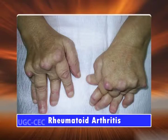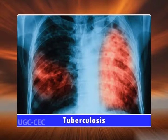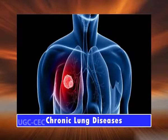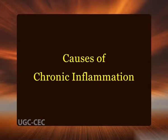This later type of chronic inflammation is the cause of tissue damage in some of the most common and disabling human diseases such as rheumatoid arthritis, atherosclerosis, tuberculosis, and chronic lung diseases. Now coming to the causes of chronic inflammation.